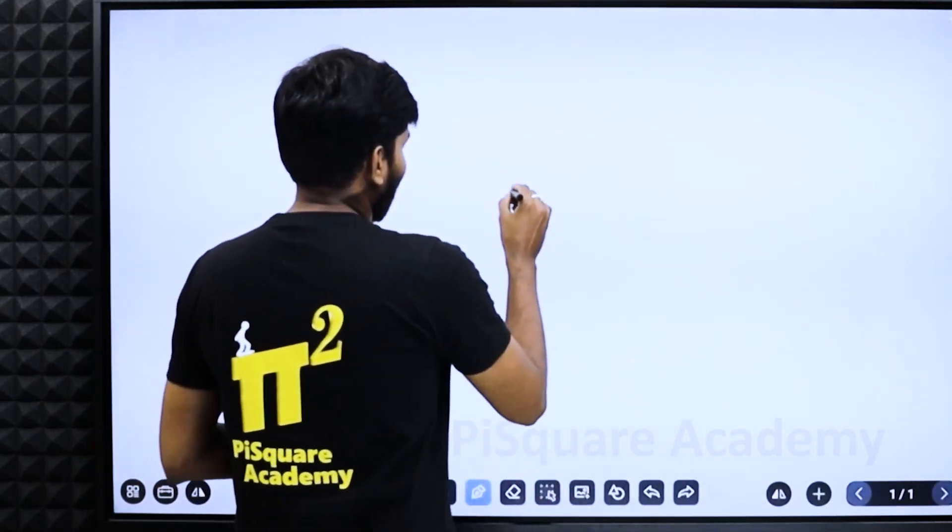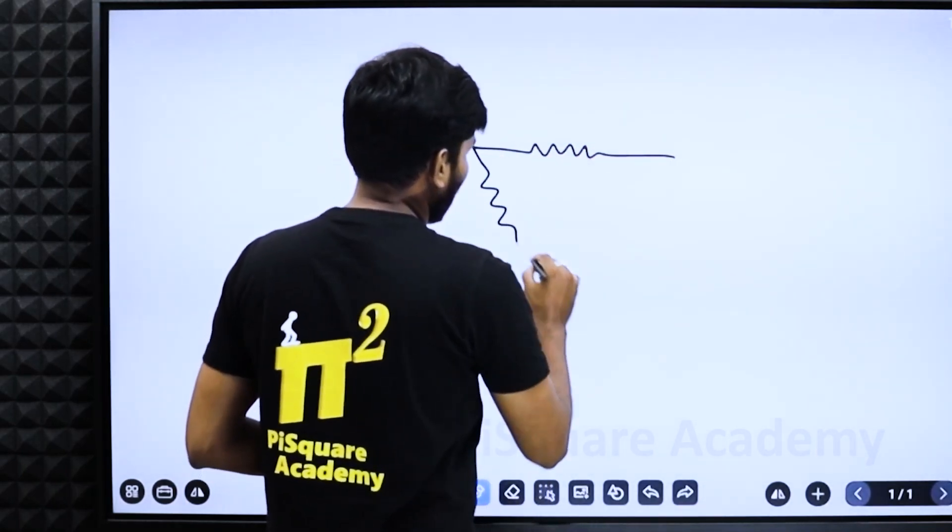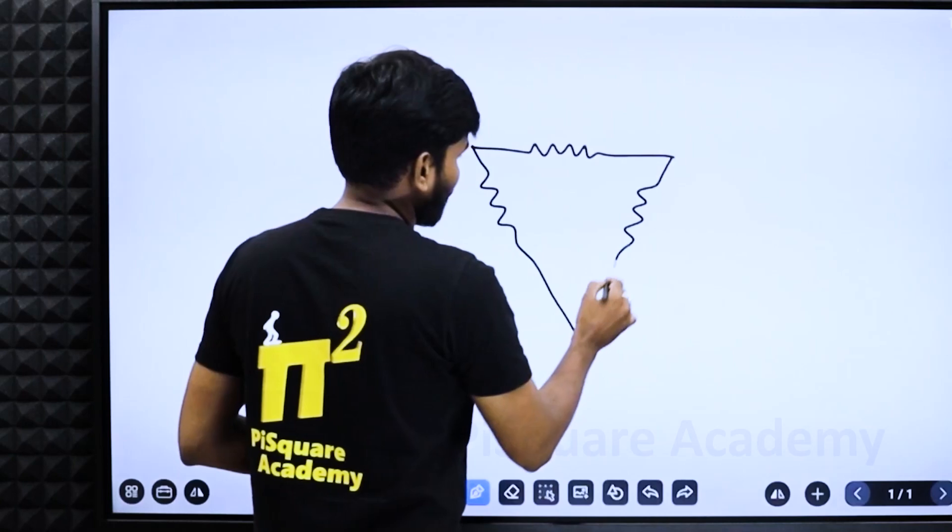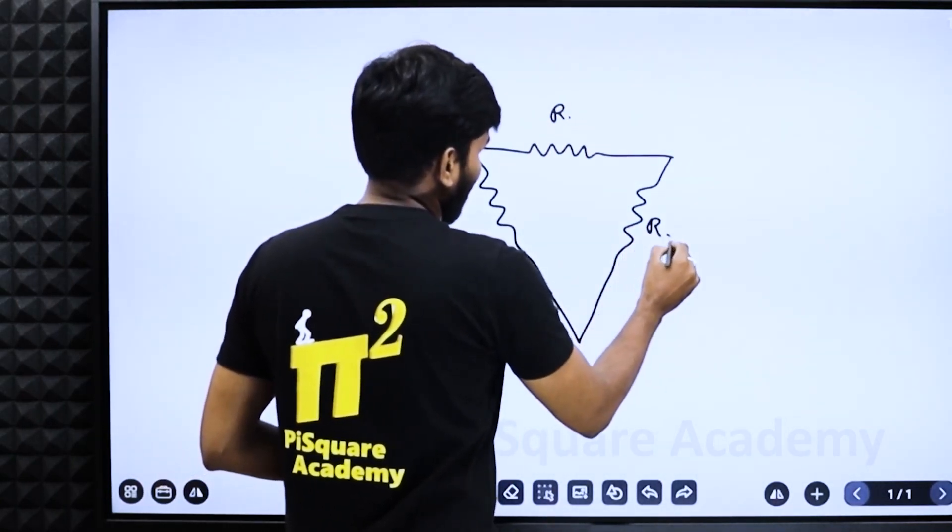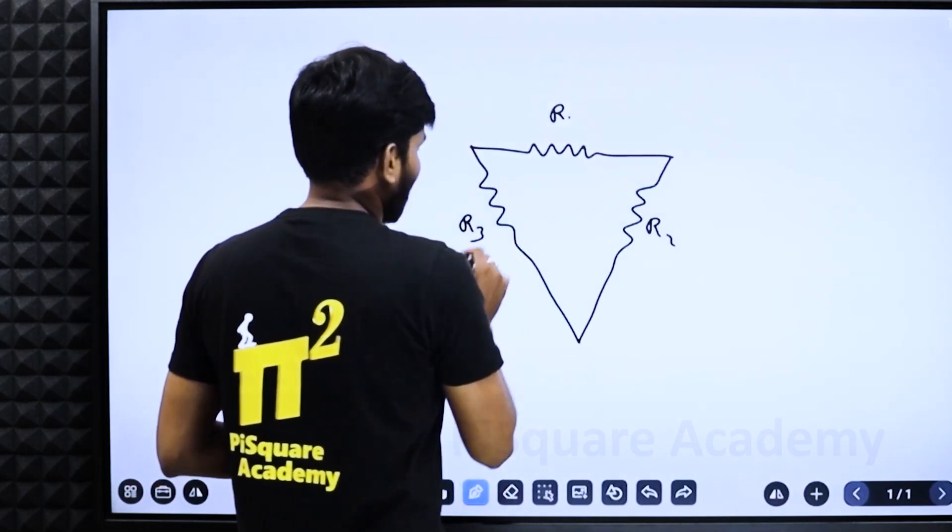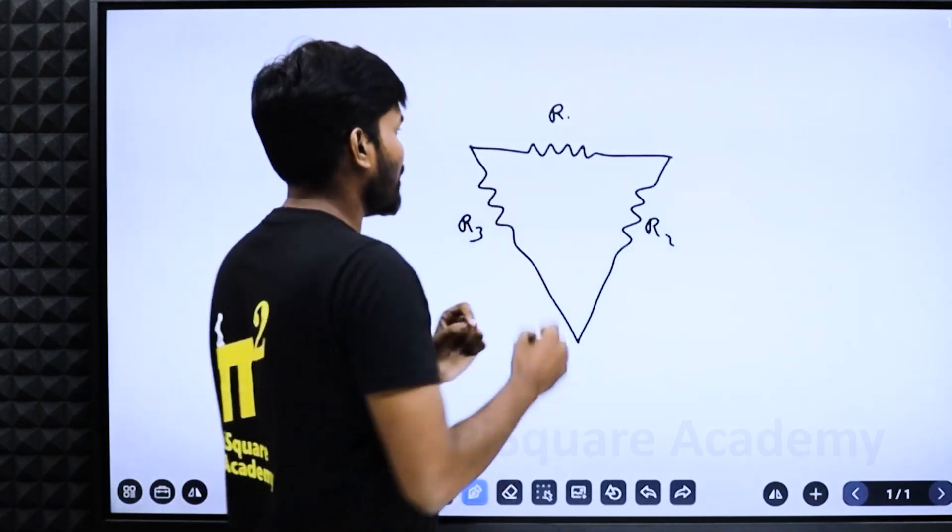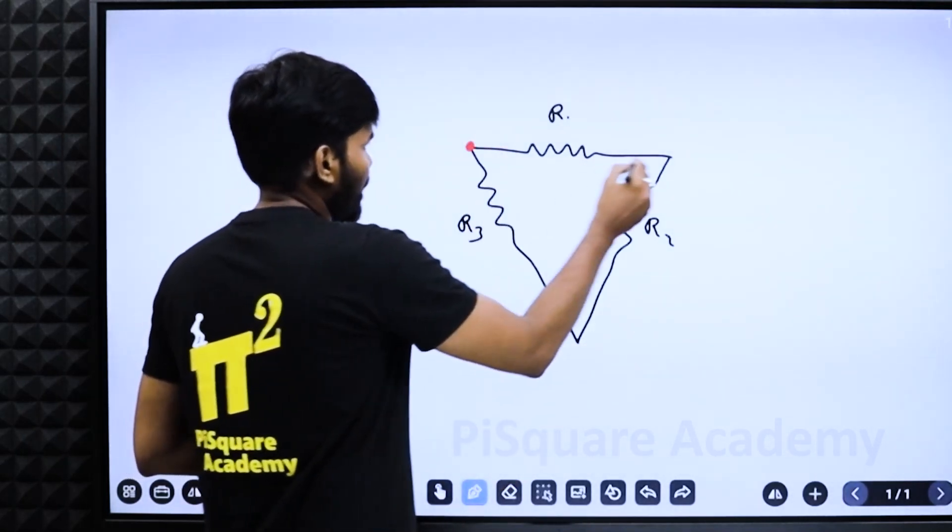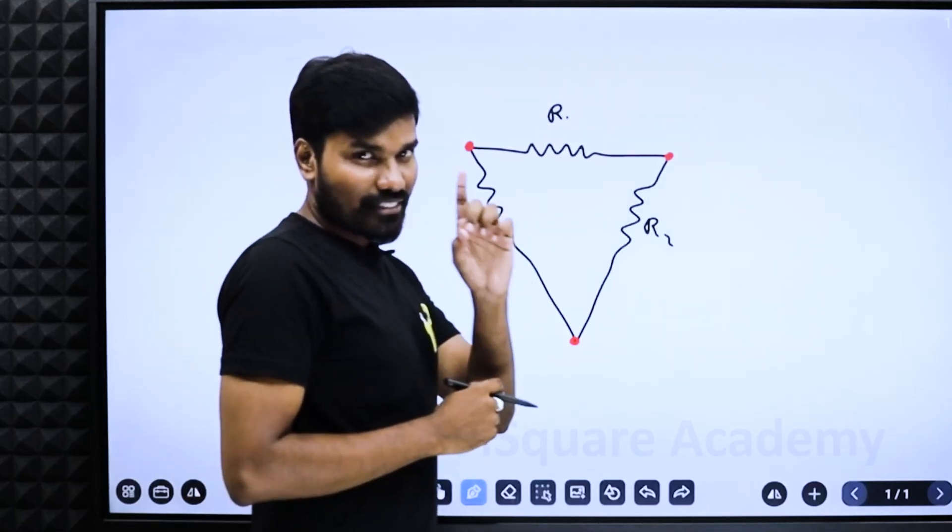Let me take a delta connection. I have this delta. Whenever you see a delta R1, R2, R3 with some values, the first step you should do is mark the three points of the delta.